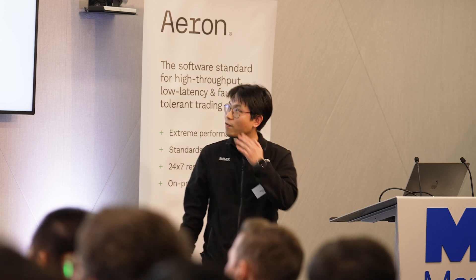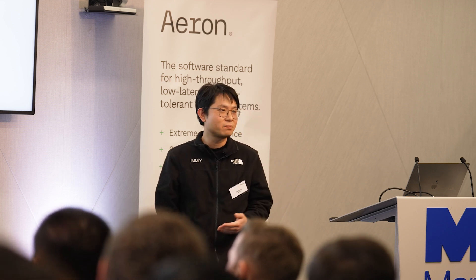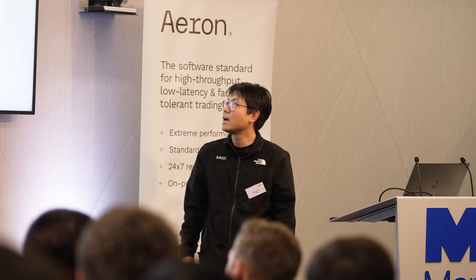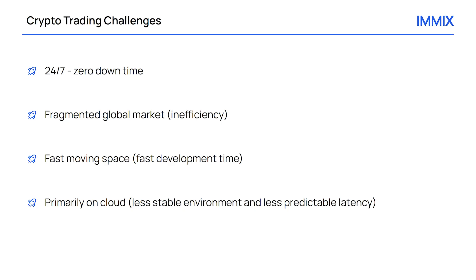Crypto market is very fragmented. What I mean by that is a lot of exchanges, a lot of trading venues, a lot of liquidity providers, and they're all located in different locations — meaning there are a lot of inefficiencies in the market. It was also fast-moving. When we're talking about onboarding new features it's a matter of days, not weeks — requiring very fast development times. And it's primarily on clouds, which means less stable environments and less predictable latency.